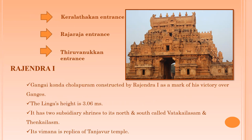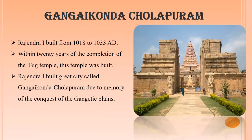The temple at Gangaikonda Cholapuram was constructed by Rajendra Chola I as a mark of his victory over the Gangas. The height of the Linga in the sanctum is 3.06 meters. The temple has two subsidiary shrines to its north and south called Madakailasam and Tenkailasam. The Vimana of this temple is almost a replica of the Tanjavur temple. Gangaikonda Cholapuram was built from 1018 to 1033 AD. Raja Raja I built this great city called Gangaikonda Cholapuram in memory of the conquest of the Gangetic plain.